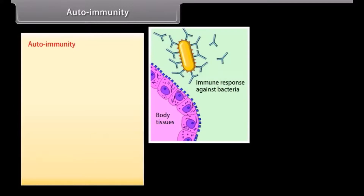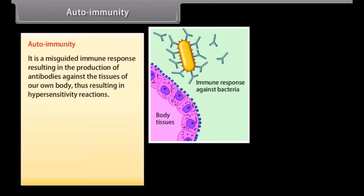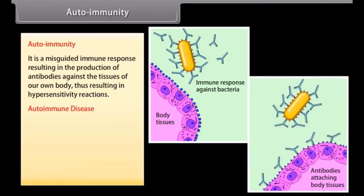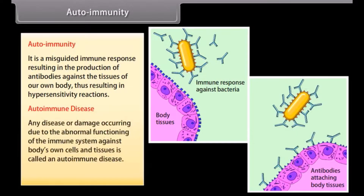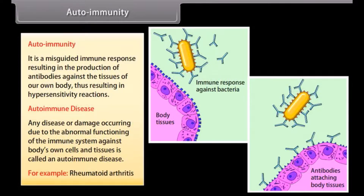Auto-immunity is a misguided immune response resulting in the production of antibodies against the tissues of our own body, thus resulting in hypersensitivity reactions. Any disease or damage occurring due to the abnormal functioning of the immune system against the body's own cells and tissues is called an auto-immune disease. For example, rheumatoid arthritis.